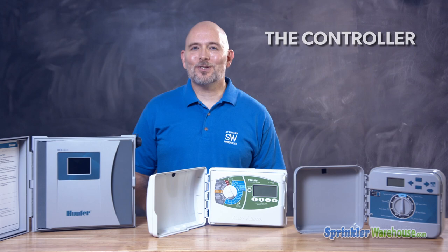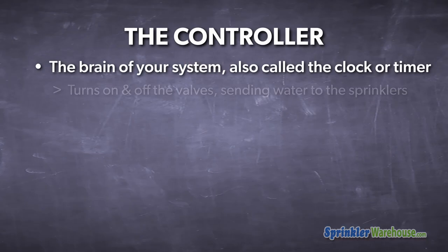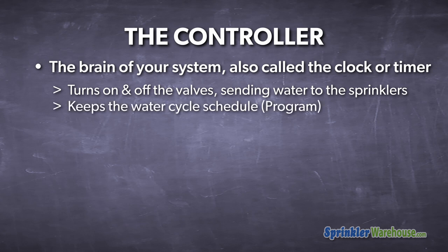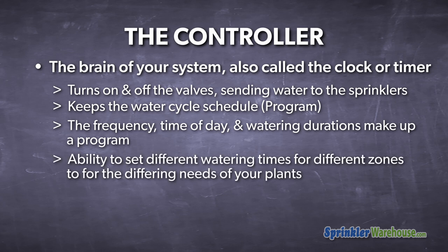The controller, also called the clock or timer, is the brain of your system. It sends a signal to the valves to tell them when to turn on and off. A controller keeps a regular schedule for your irrigation system. It allows you to choose the frequency, time of day, and length of each watering cycle, and it allows you to set different watering times for different zones to meet the particular needs of your landscape.